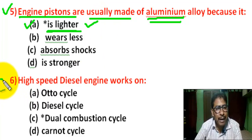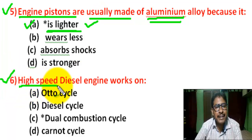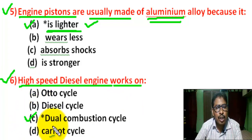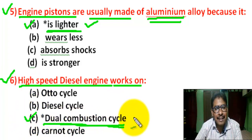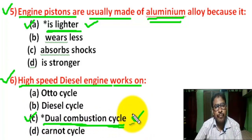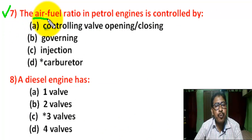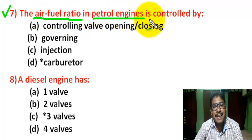Question number 6: A high-speed diesel engine works on — there are four options. Correct answer is C — dual combustion cycle. Question number 7: The air-fuel ratio in a petrol engine is controlled by — there are four options.